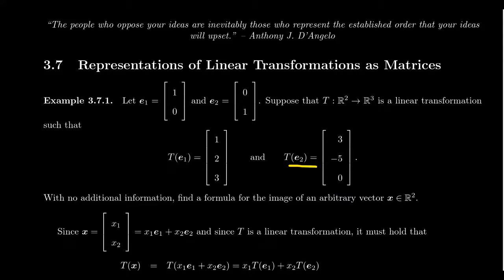It turns out that with this little information, we actually have enough to know exactly what T will do to every vector. How do we know that? Because E1 and E2 form a basis for R2, every vector in R2 can be expressed as a linear combination of E1 and E2. And linear transformations preserve linear combinations — that is, a linear transformation will send a linear combination to a linear combination.